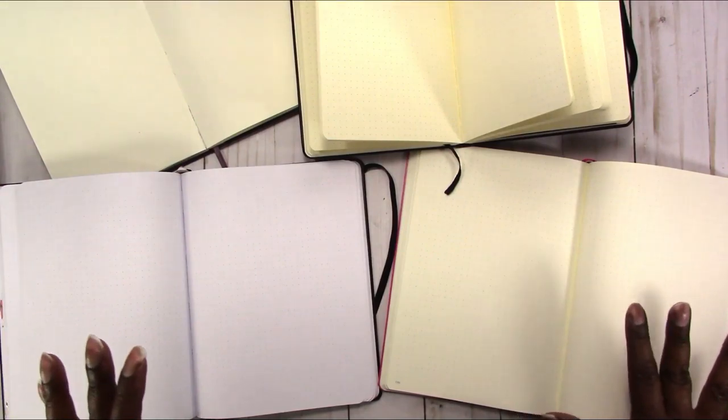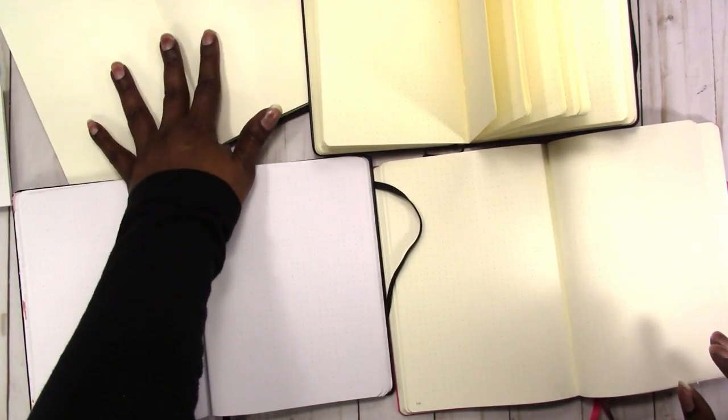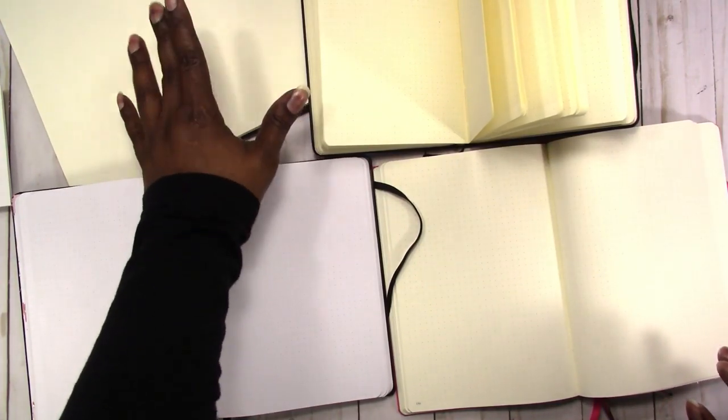I haven't used the Leuchtturm much but it has a nicer flat lay than any of the other ones. I have to give it to the Michaels one - it lays flat nicely too. And definitely the Moleskine does as well. So the higher ends lay flat easily.